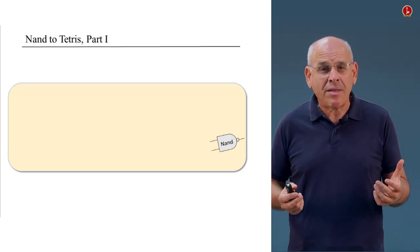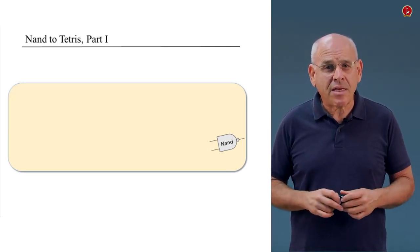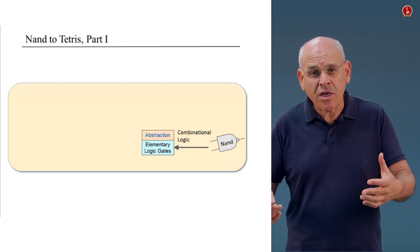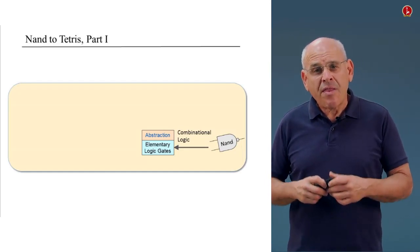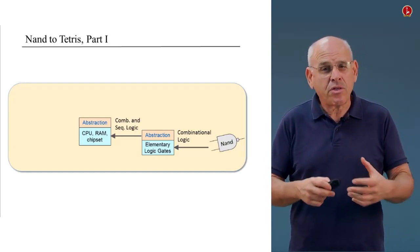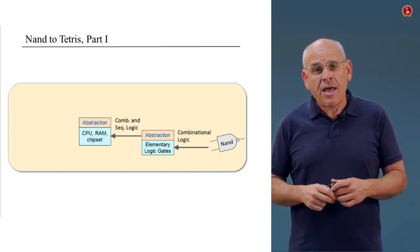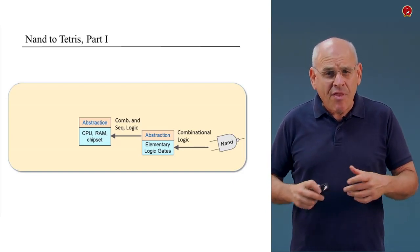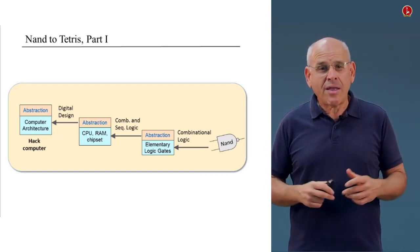NAND is something I can describe in 10 seconds, and I will do it in one of the following units. For now, let us assume that it's simply a basic logic gate. We take this NAND gate and from it, using a certain art called combinational logic, we're going to build a whole set of elementary logic gates like AND, OR, XOR, and so on. Then we will take these gates and use both combinational logic and sequential logic — a different art of design that takes into consideration time and clocks — and from it build things like registers, RAM units, and a CPU. Then we'll take this chipset that we built and design from it a full-blown computer architecture called Hack.